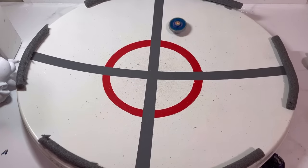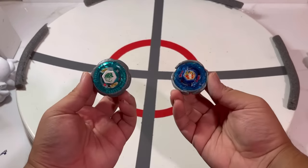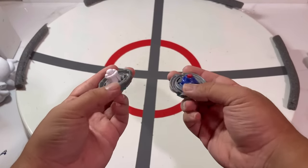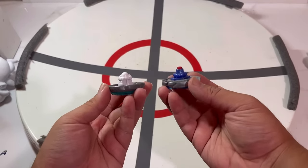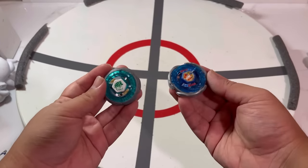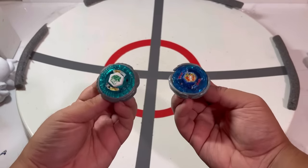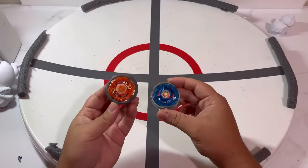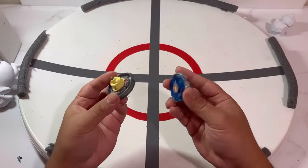And there you go. Storm Pegasus somehow managed to find the correct angle to knock out Rock Leone. The score is now 3-2, which means Storm Pegasus wins. These battles were so fun to watch. I feel like because the stadium is so big, Storm Pegasus can actually run around and get a really good charge-up hit. But now let's move on to stage 3 against Burn Phoenix.